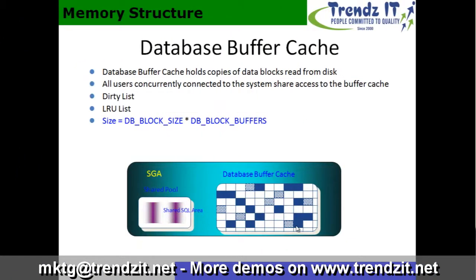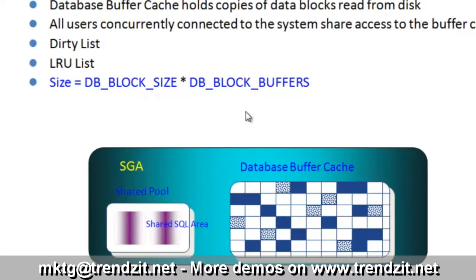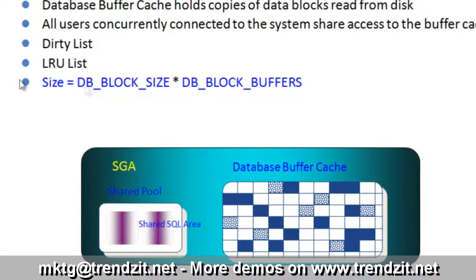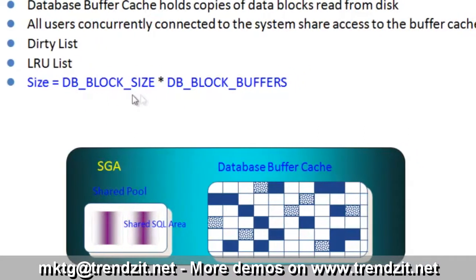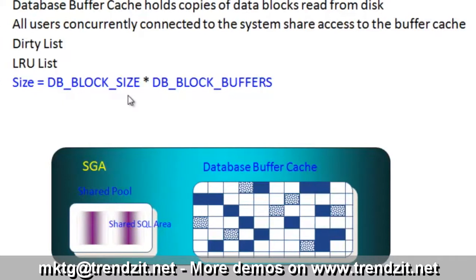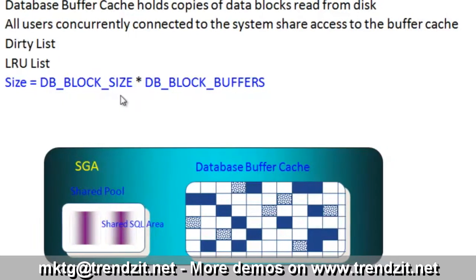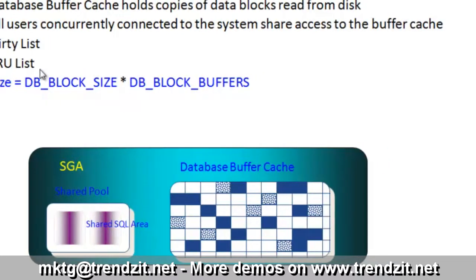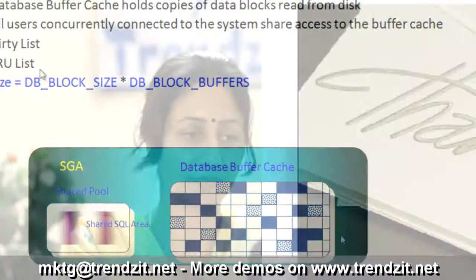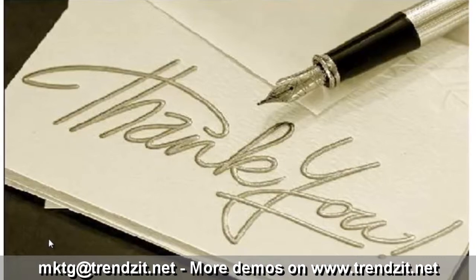Over here we concentrate on the database buffer cache. The database buffer cache is determined by db_block_size, and if we take a product of db_block_size along with db_block_buffers, that is exactly what is going to make your database buffer cache. Thank you.